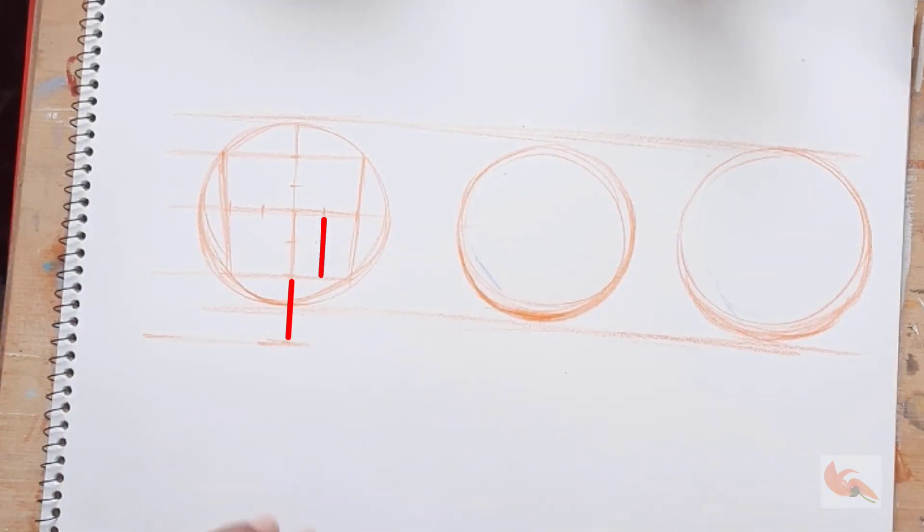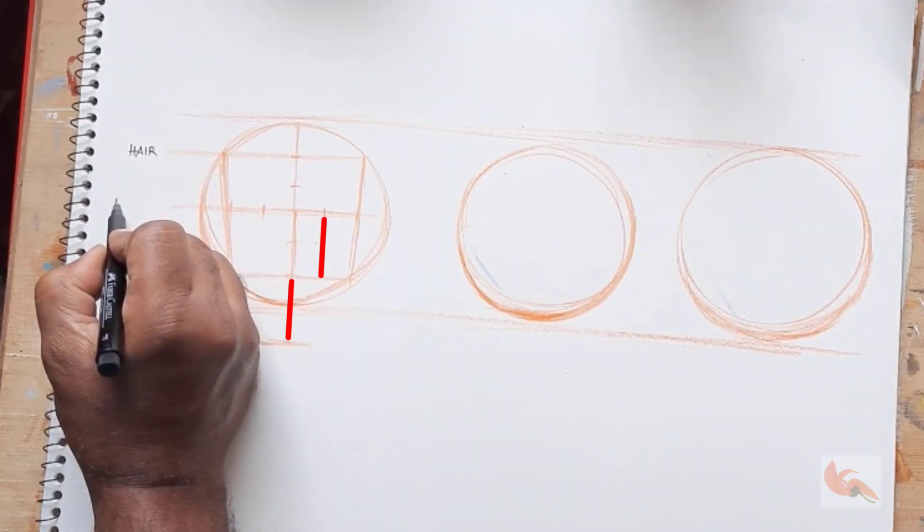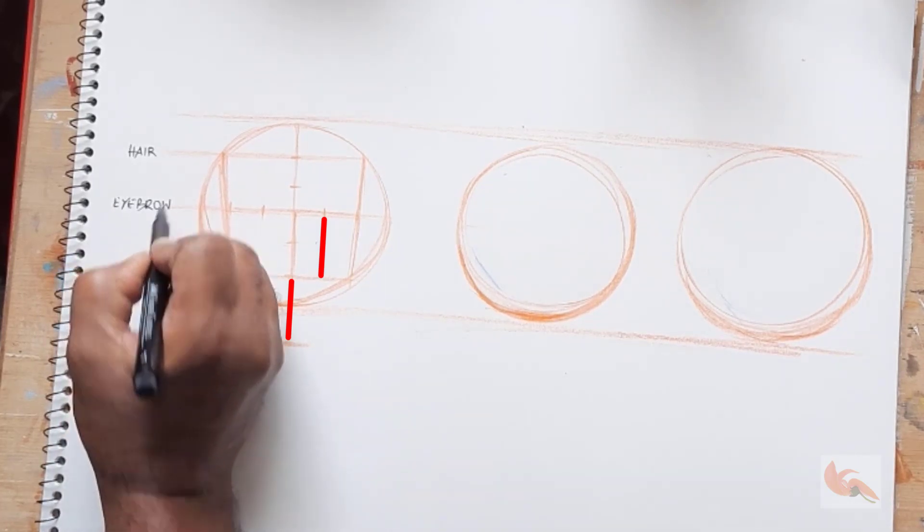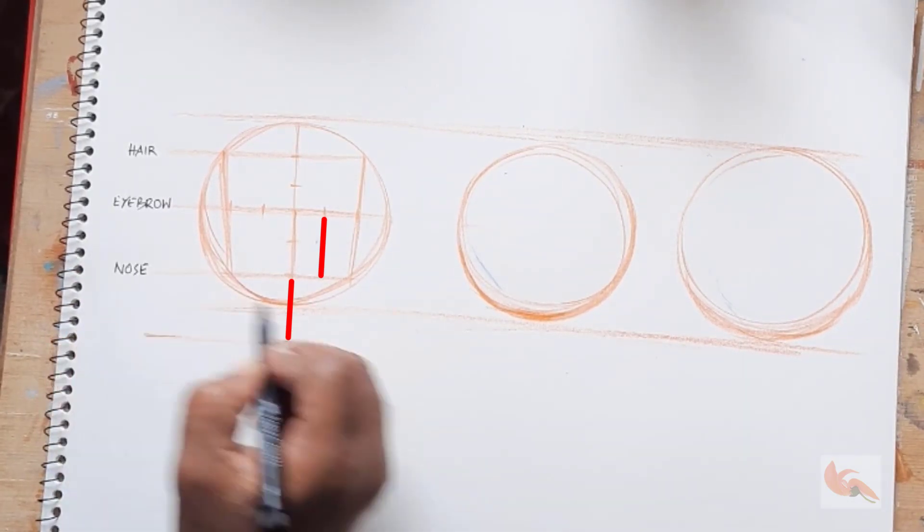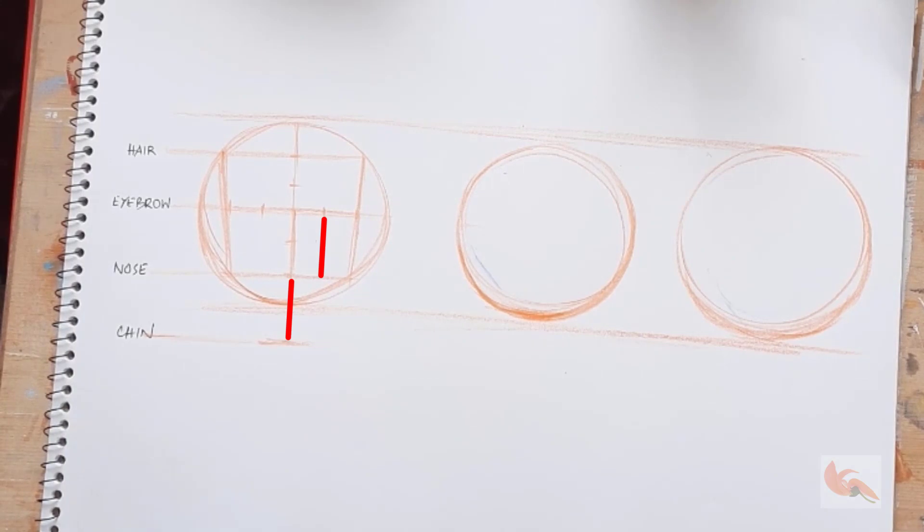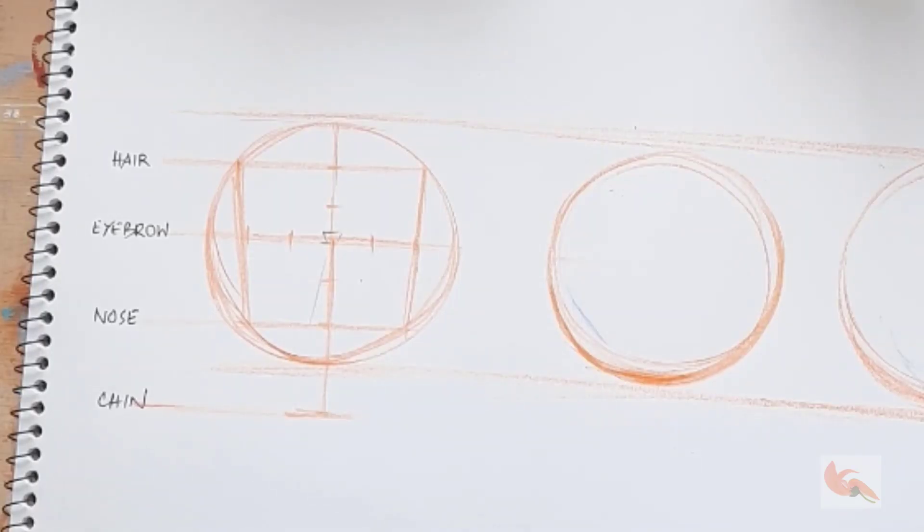Now we extend the middle line towards the bottom. The distance from nose to chin is same as that of eyebrows to nose. So mark the point on the vertical line as the length for the chin. Now we have got the guidelines.